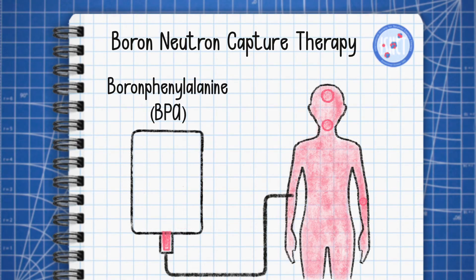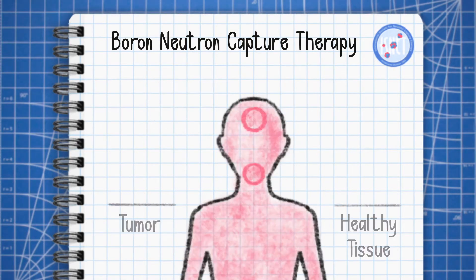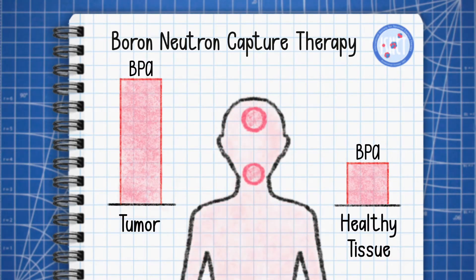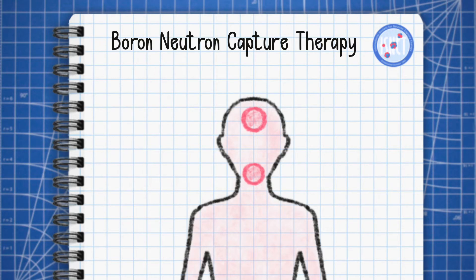The boron compounds used for clinical treatments are BPA, a borinated amino acid, and BSH, sodium borocaptate. Both accumulate preferentially in the tumor. Huge efforts are dedicated to developing new boron compounds and strategies that could increase boron concentration in the tumor.